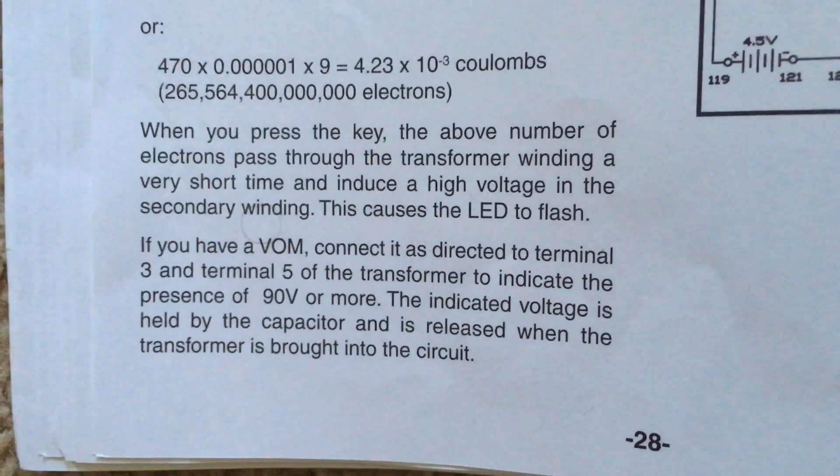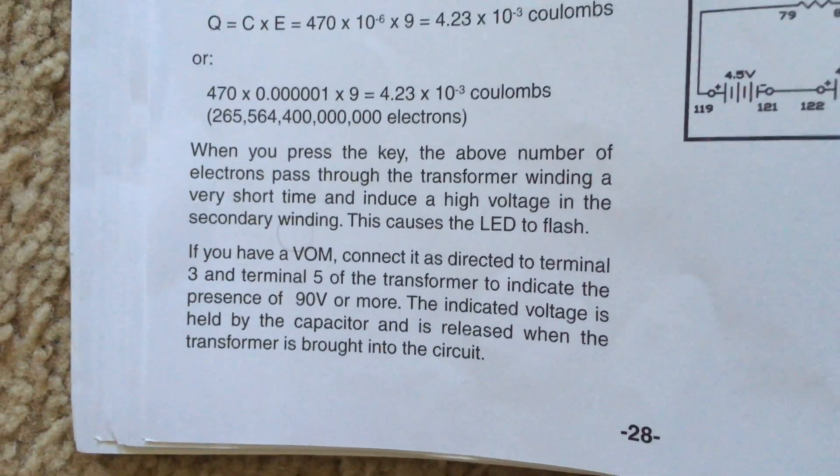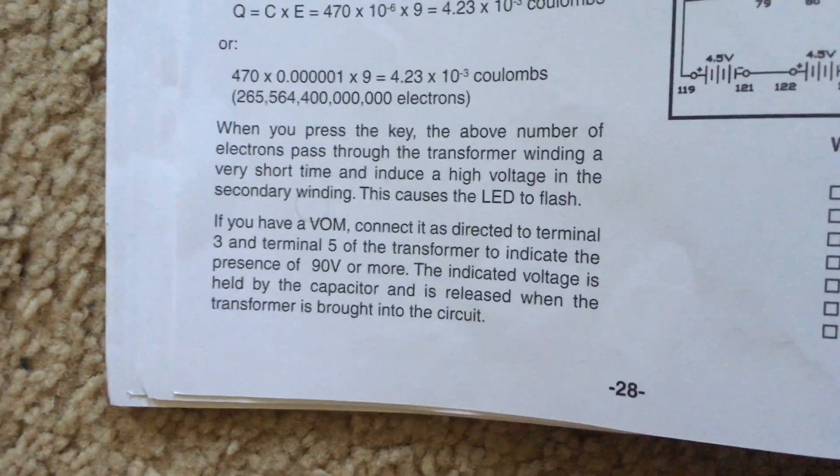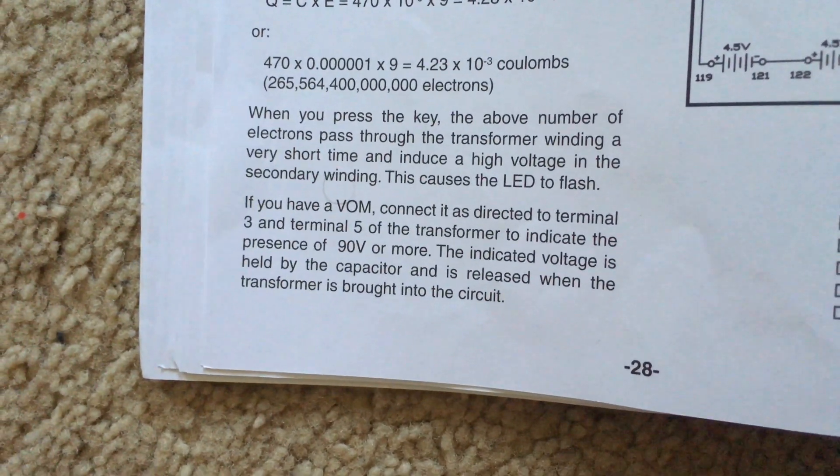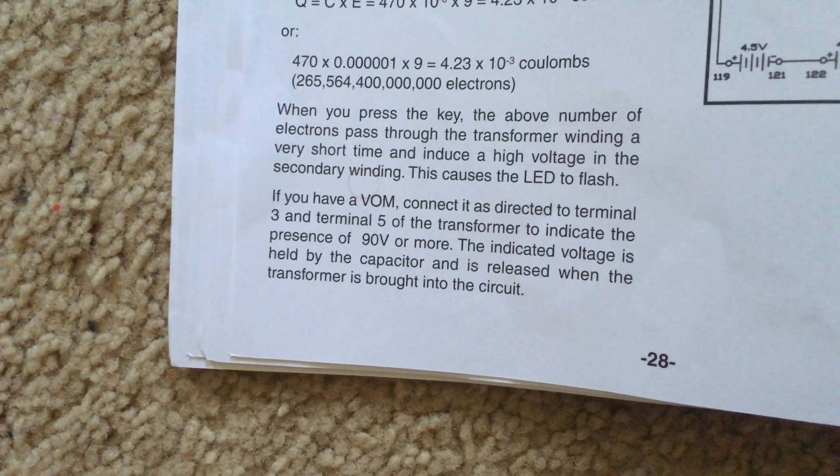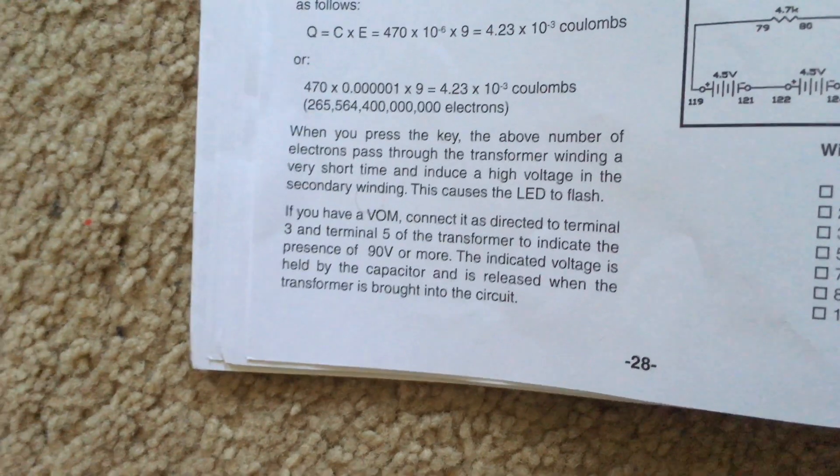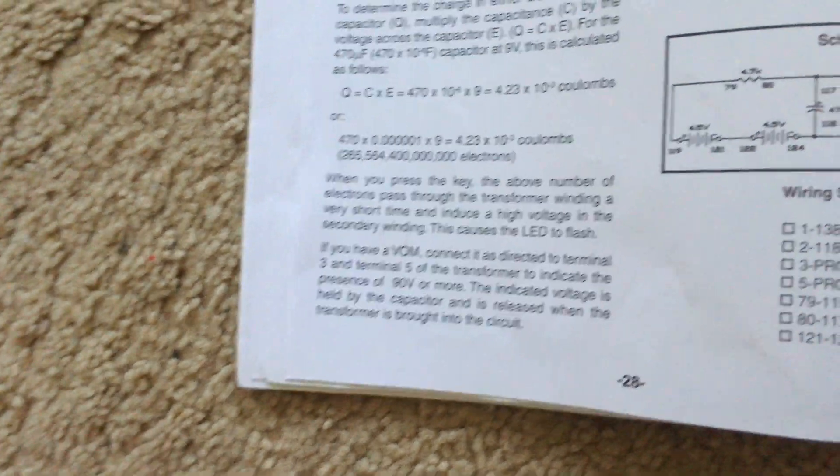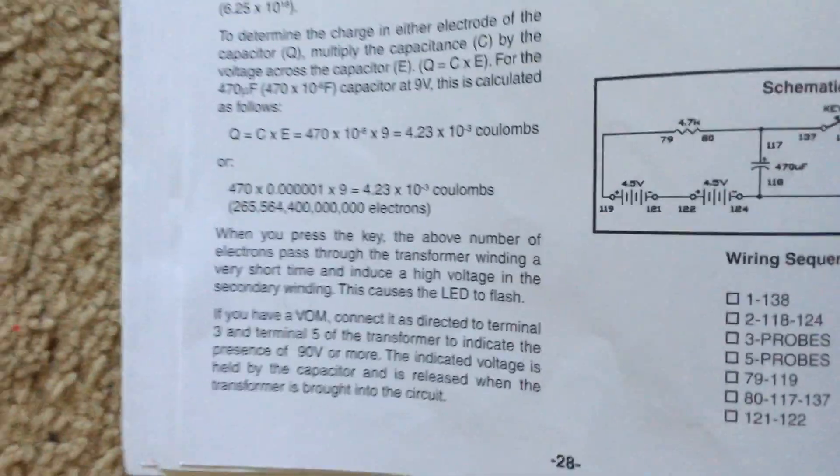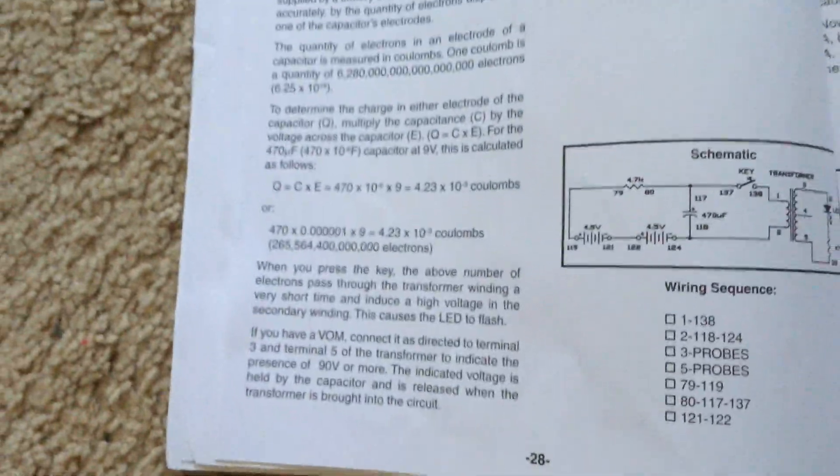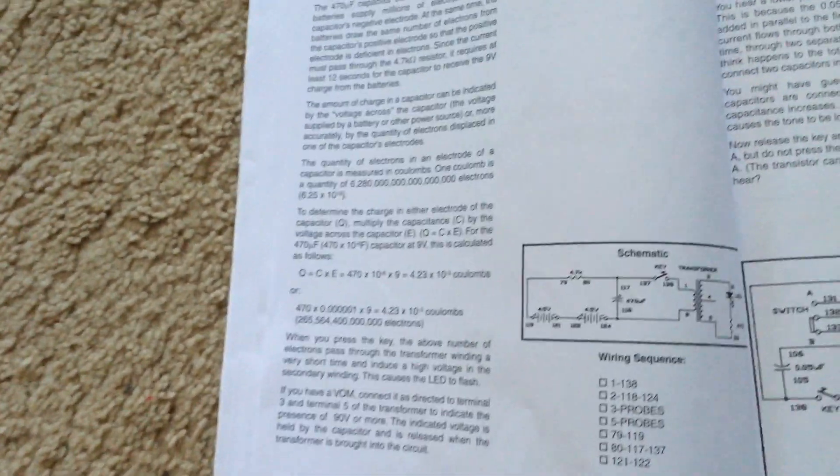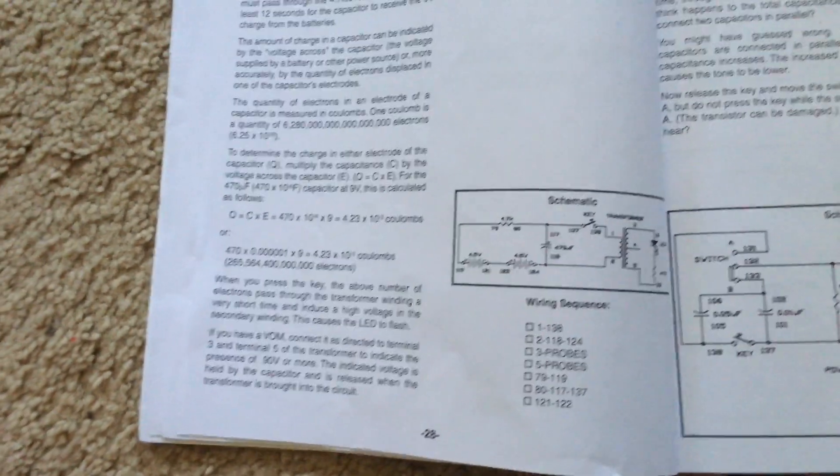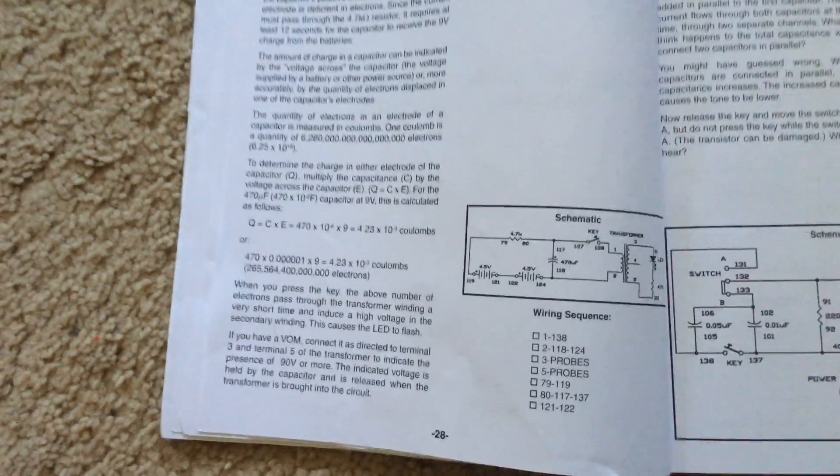If you have a voltage meter you can connect it to terminals 3 and 5 of the transformer to indicate the presence of 90 volts or more. The indicated voltage is held by the capacitor and released when the transformer is brought into the circuit. I don't fully understand this. I'm not a big expert in electricity or electronics, but feel free to perform this project if you are familiar with its workings and assembly.